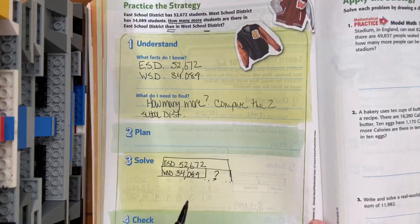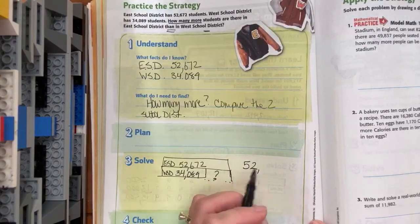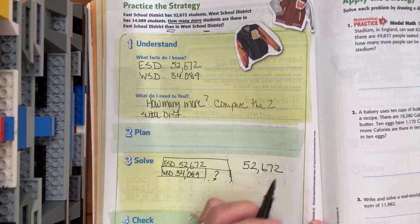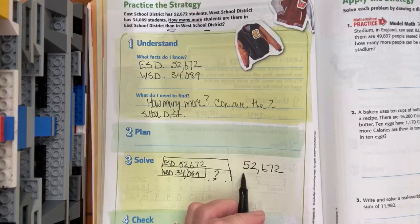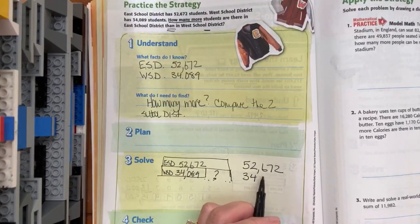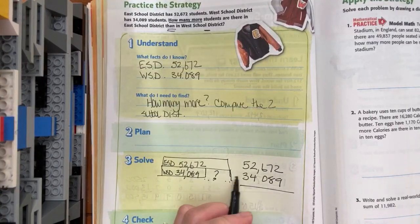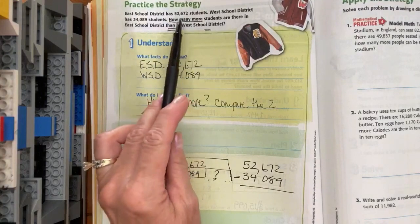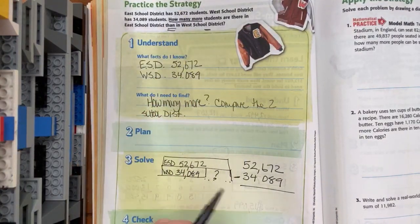Let's solve. 52,672 minus 34,089. We're subtracting because it said how many more from one school district than the other, so we know we're comparing.